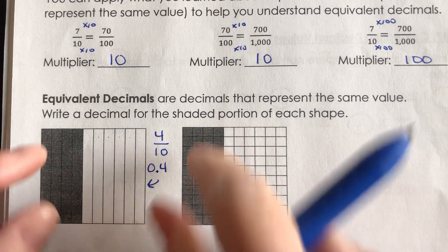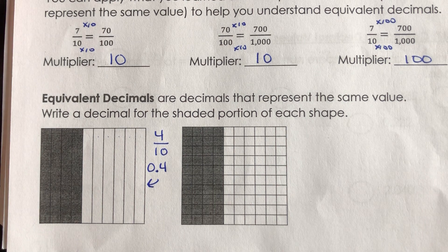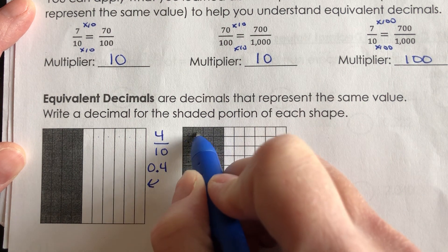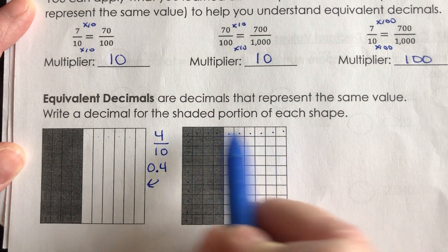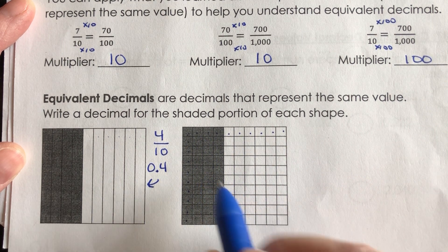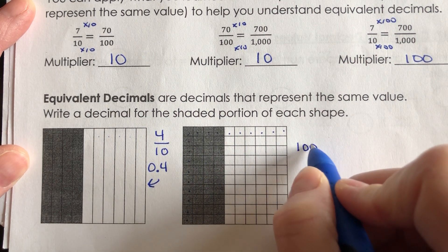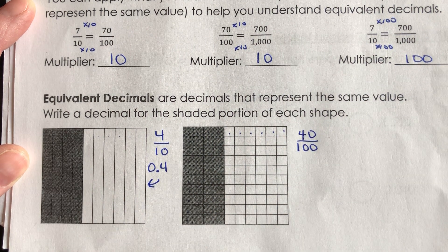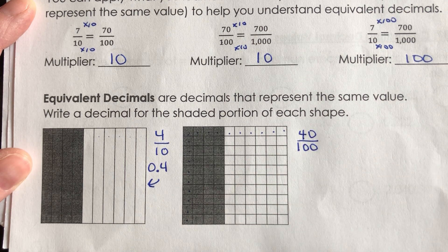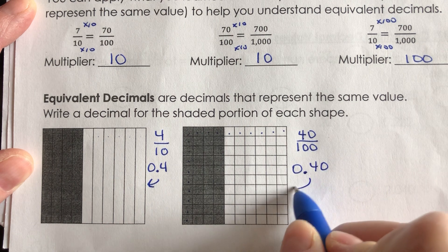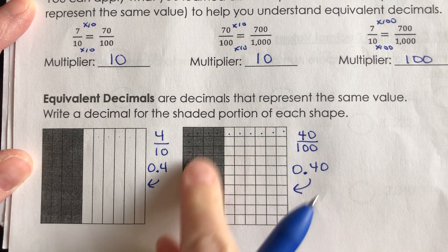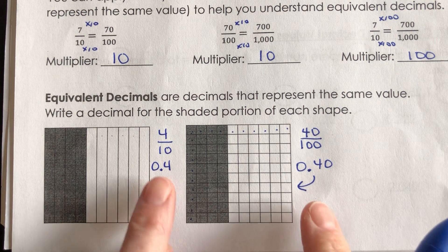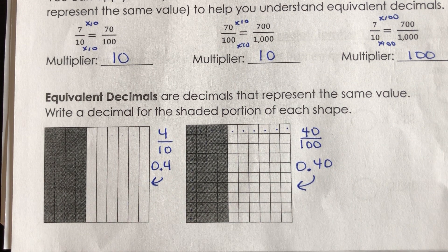Now in this one, which has the same amount shaded, it's broken up into smaller pieces. This is a 10 by 10 grid, which means there are 100 little pieces in the whole. And I want to know how many of these are shaded: 10, 20, 30, 40 out of 100 are shaded. So 40 hundredths would be written as 0.40. The decimal for the shaded portion of this shape would be 0.40. So 0.4 and 0.40 are equivalent.